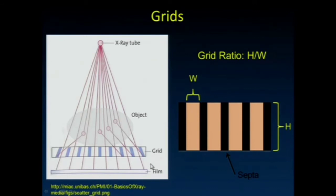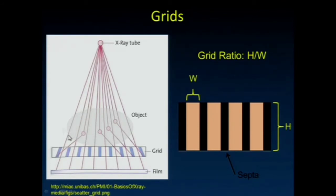Grids are another way to reduce scatter. Grids are very similar to the collimator used in nuclear medicine — I want you to keep that analogy in mind. In nuclear medicine, we use that collimator to focus the gamma ray energy onto the camera; here we're going to use it to reject scatter. The holes are lined up at a particular distance and angle to the X-ray tube, so primaries that aren't changed in direction should pass through the holes. Occasionally a primary may strike one of the pieces of lead and not make it through, so grids reduce primaries as well as scatter — but they reduce scatter much more than primaries, so our overall scatter to primary ratio gets much better.